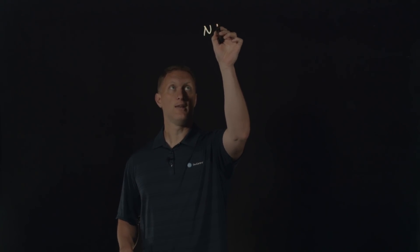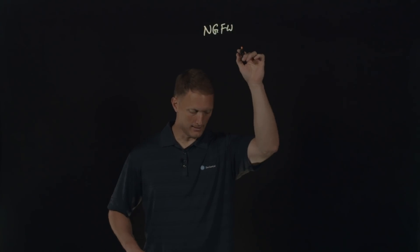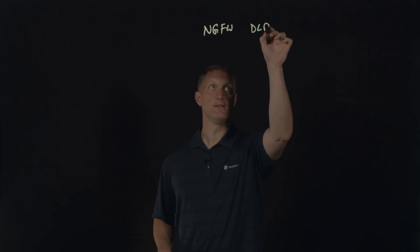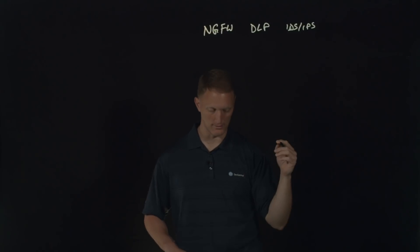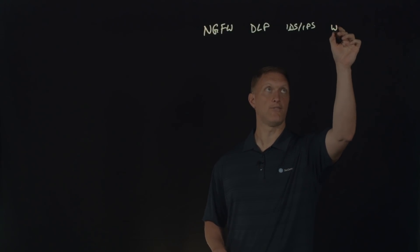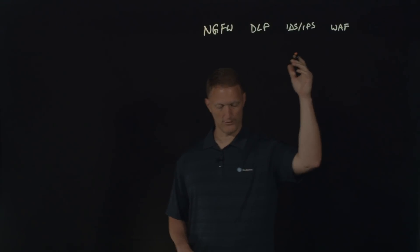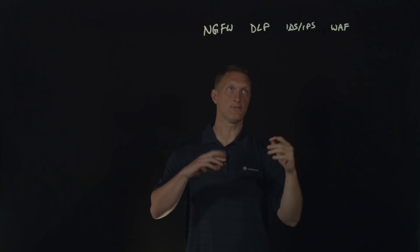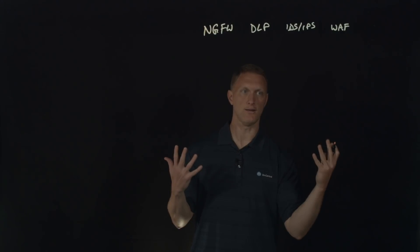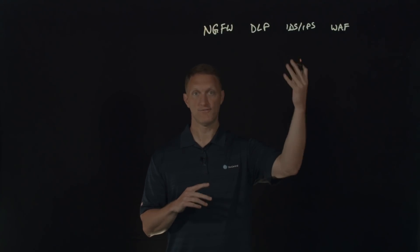A lot of times what organizations will do is say they've got a lot of security devices or security functions they need to use. So I'll put a little list up here — you may have things like a next-gen firewall, a data loss prevention device, an IDS/IPS (intrusion detection or prevention system), a WAF, and an anti-malware or antivirus type device. There could be a whole multitude of these different security devices.